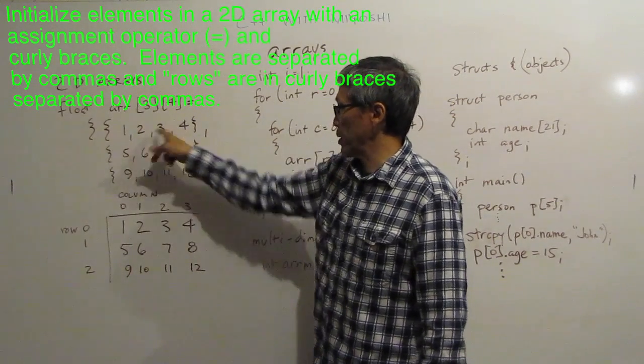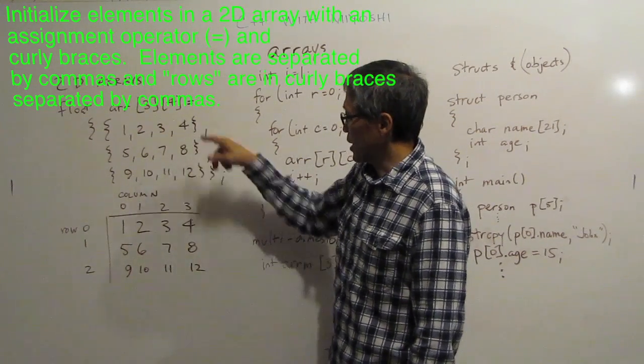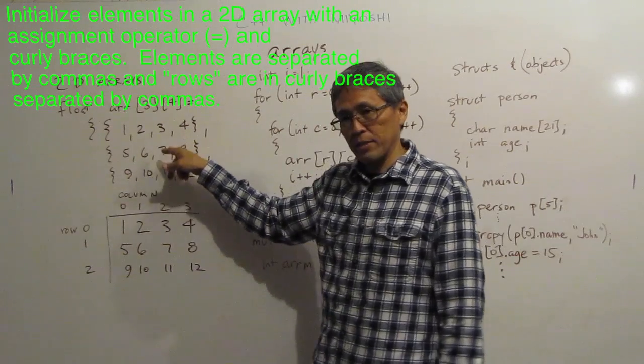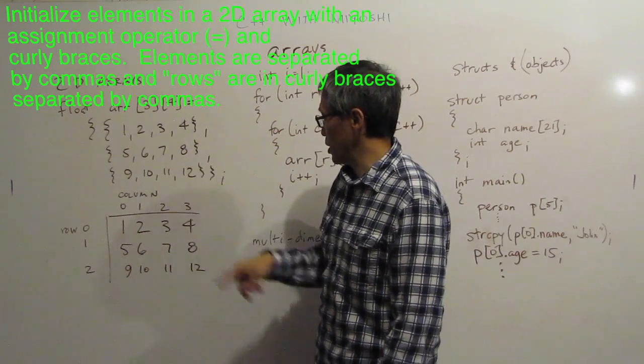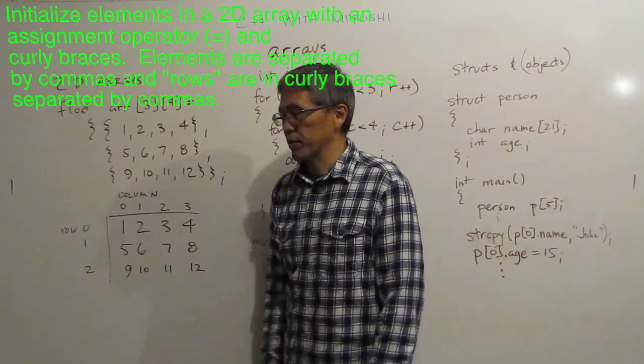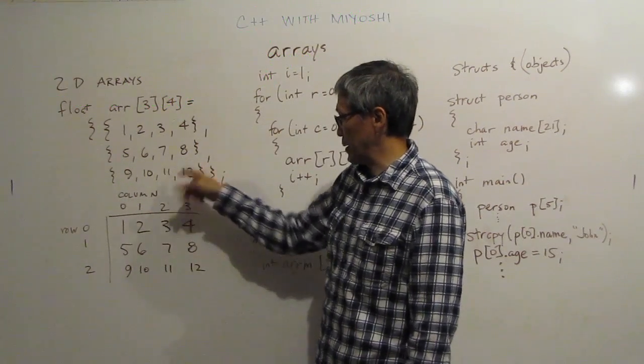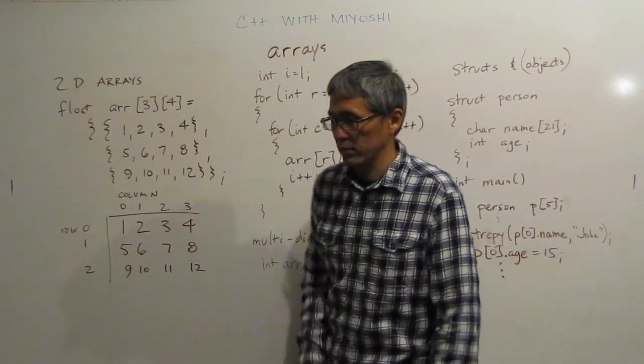I have open curly brace and an open curly brace. One, two, three, four separated by commas. Closed curly brace, comma, open curly brace, five, comma, six, comma, seven, comma, eight. Closed curly brace and a comma. And an open curly brace, nine, comma, ten, comma, eleven, comma, twelve. Closed curly brace, closed curly brace, semicolon.